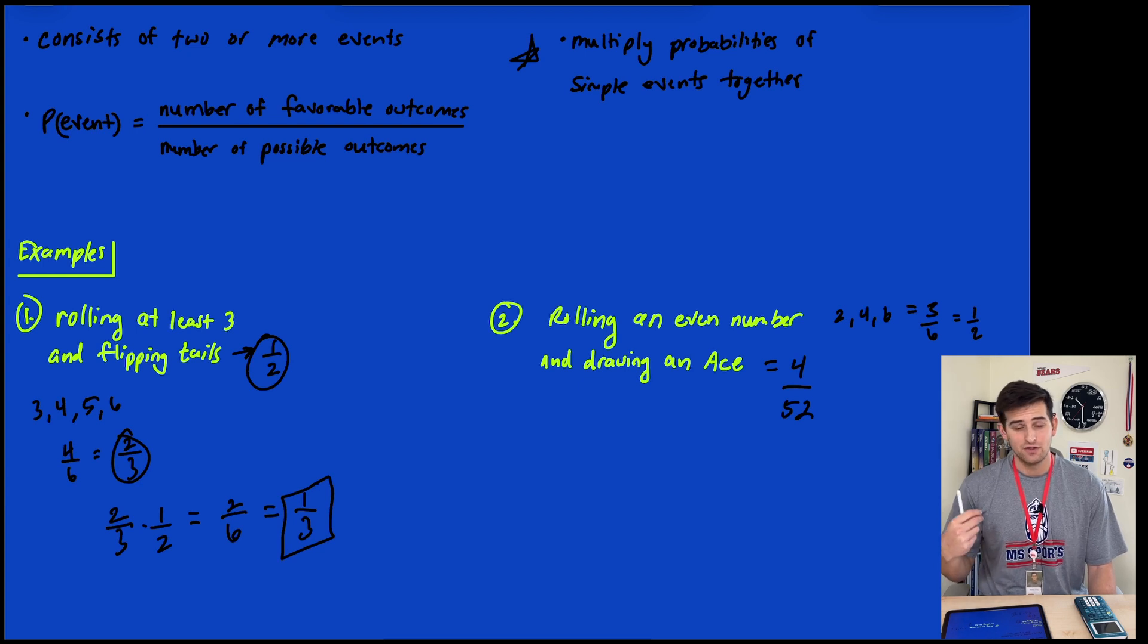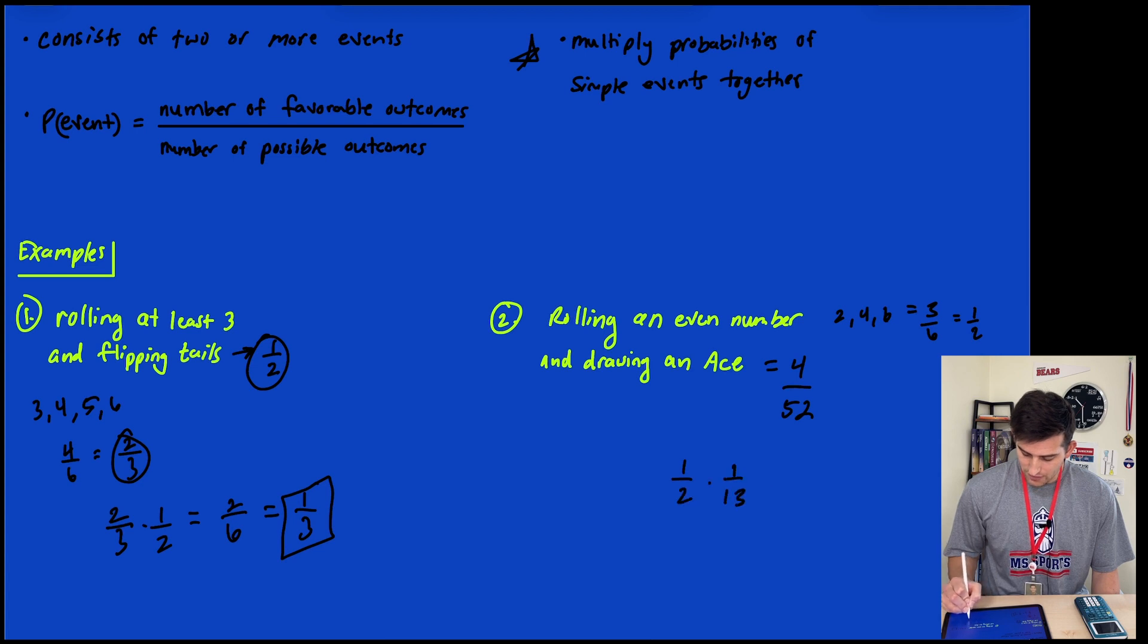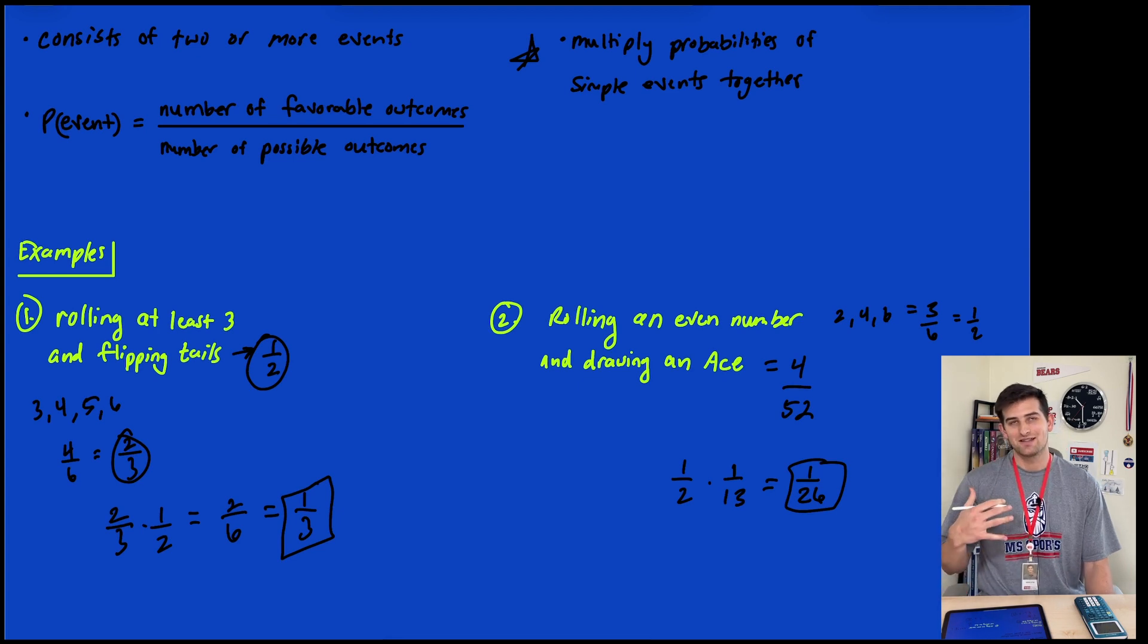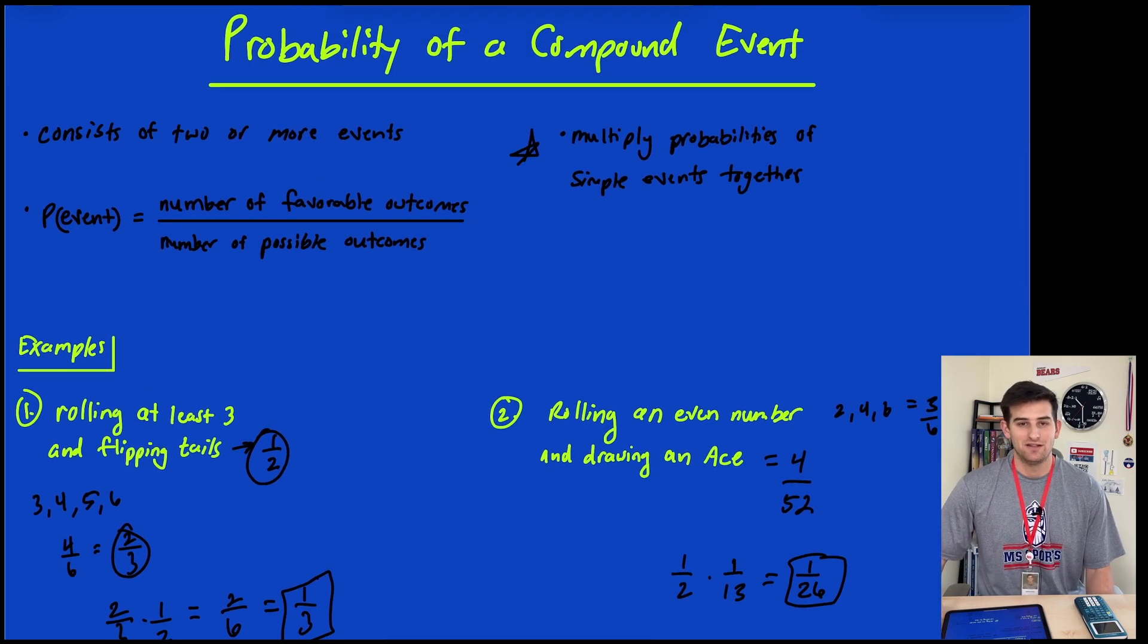We take 1/2 times 1/13 and we get 1/26. This is a lot less likely to happen than example number one. That is how we can find the probability of a compound event.